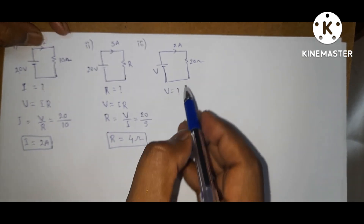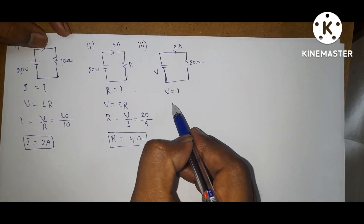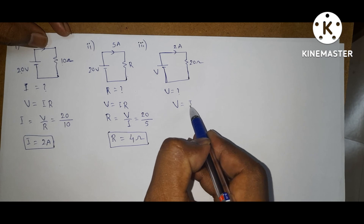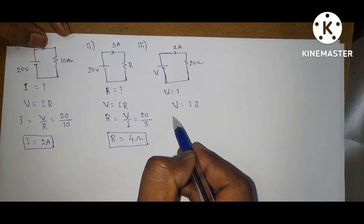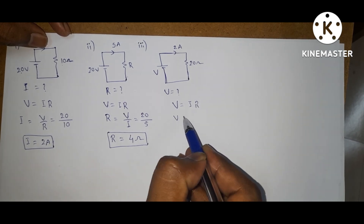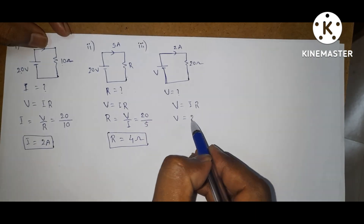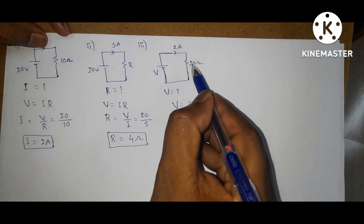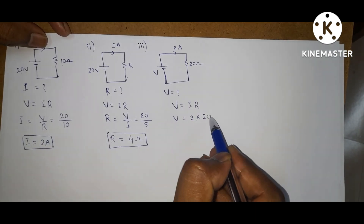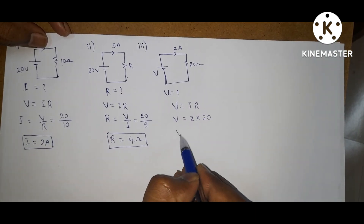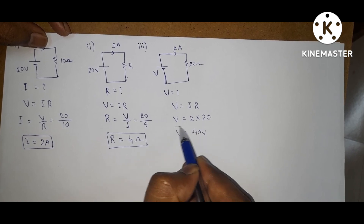Coming to the third problem. By Ohm's law, V = IR. The current is 2 A and the resistance is 20 Ω. So the total voltage is 40 volts. This is about Ohm's law.